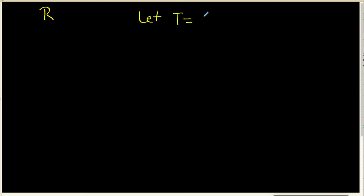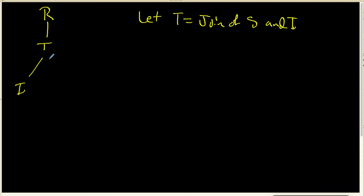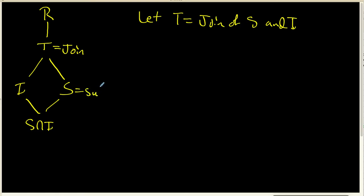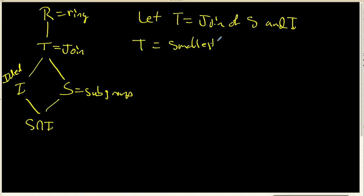I want to draw a schematic picture of what's going on here. We're going to have the ring R up here, and because I need a name for it, I'm going to let T be the join of S and I. So R contains T, and T contains I, and T contains S, and S and I both contain their intersection. T is the join, S is a sub-ring, I is an ideal, and R is the main ring. T is the smallest sub-ring that contains the set S union I.